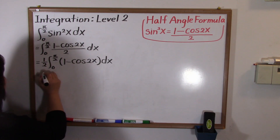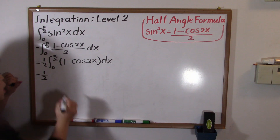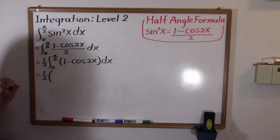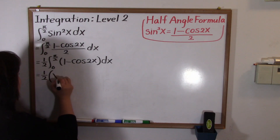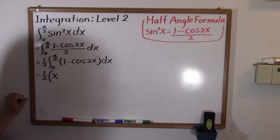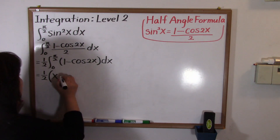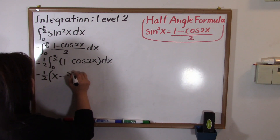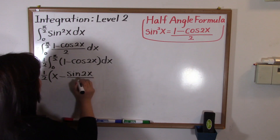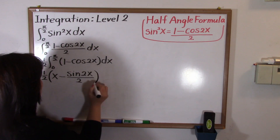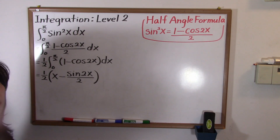Next, we integrate one minus cosine two x. We bring down the one half, and inside the brackets: the integral of one is x, and the integral of minus cosine two x is minus sine two x over two.